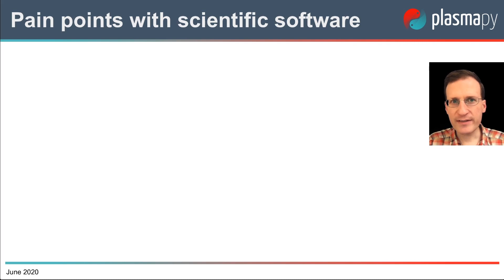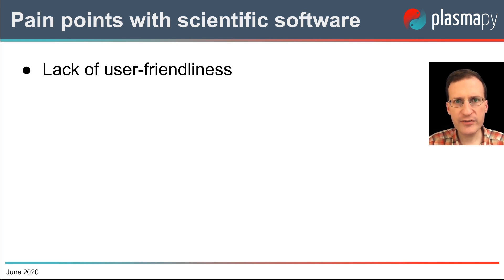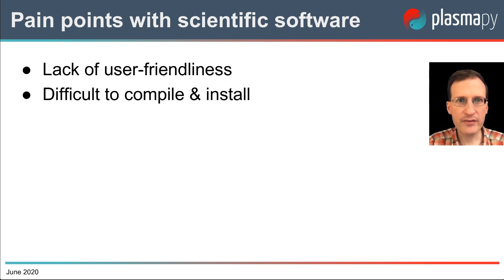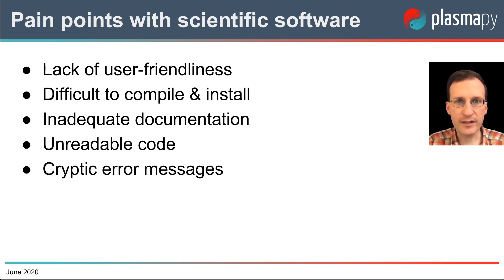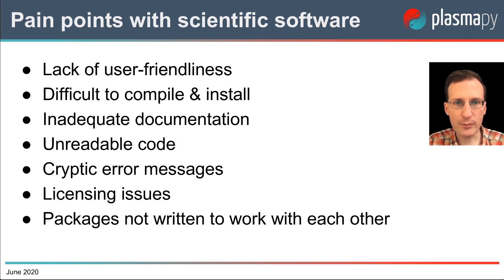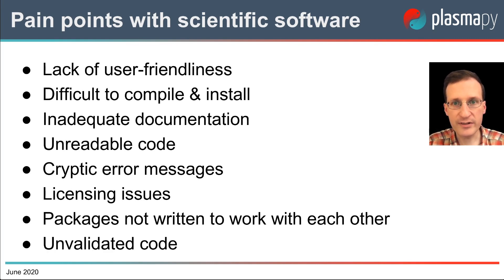It's pretty common to encounter pain points like these when using scientific software. There's often a distinct lack of user-friendliness. Research software tends to be difficult to compile and install, especially if the software is platform dependent or if you have to compile libraries and mess around with compiler flags. These issues are made worse when the documentation is obsolete or even missing entirely. It's often difficult to read and modify code handed to you by someone else. Error messages are often cryptic, which makes it difficult to debug. Codes are often written in proprietary languages that require expensive licenses. Packages that do exist are not written to be compatible with each other, making it difficult to combine results from multiple codes. We often use code that has not been thoroughly validated, tested, or benchmarked, which makes it harder to trust the results.